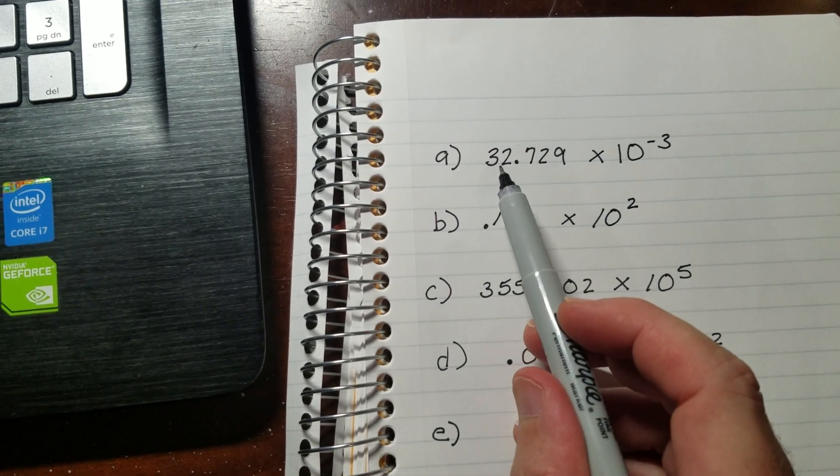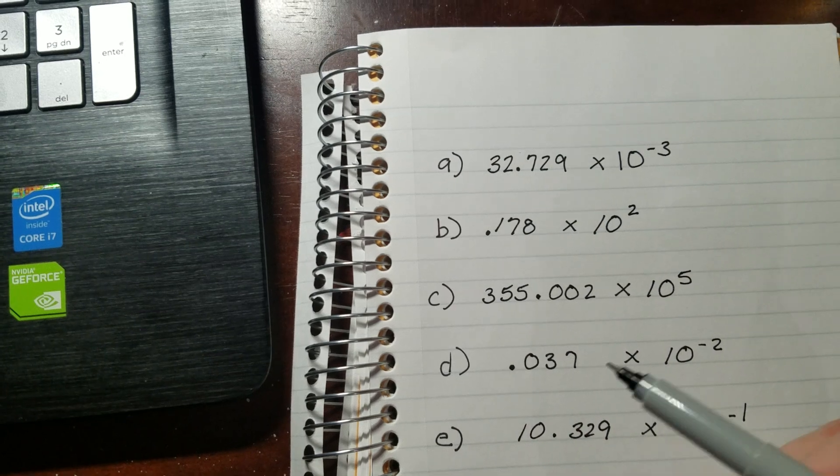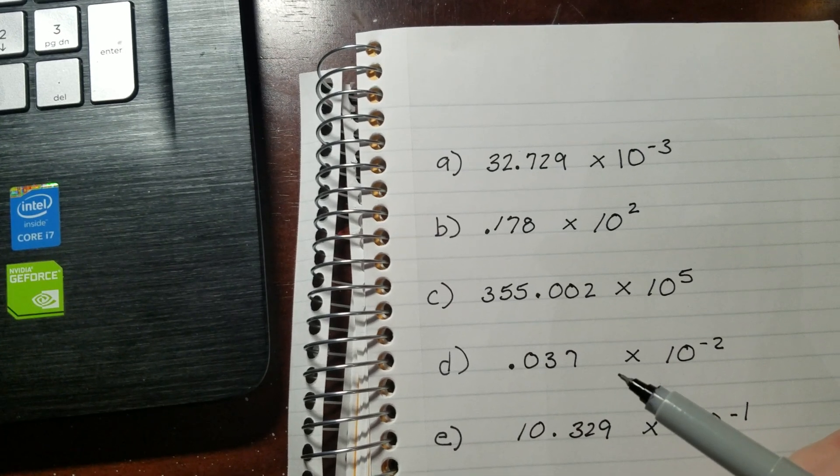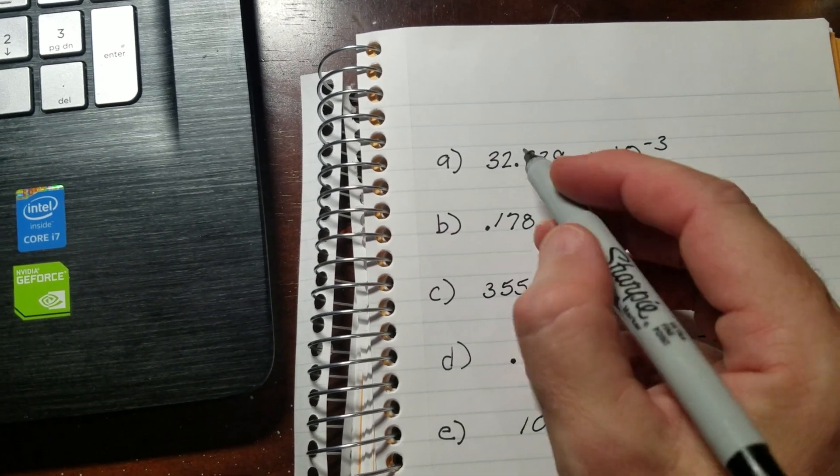If you'll notice, this is 32.729. In order to be in scientific notation, you have to have a decimal number that's between 1 and 10, and that's not the case here. But we can just make a couple of adjustments to make that happen.